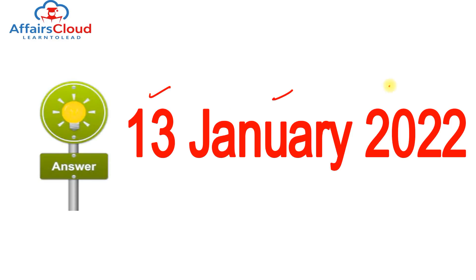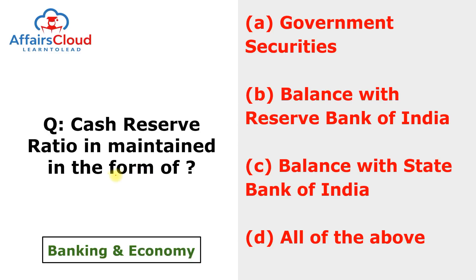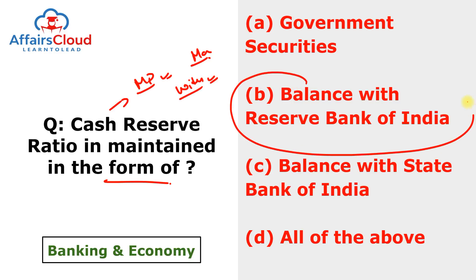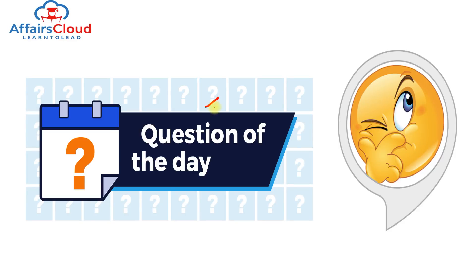Question of the day from 13th January 2022: Cash reserve ratio is maintained in the form of? Cash reserve ratio is part of monetary policy — a money market instrument used by the RBI to regulate the flow of money into the market. CRR is a certain percentage of total deposits that RBI instructs commercial banks to keep as a reserve with RBI. The answer is B — balance with Reserve Bank of India.